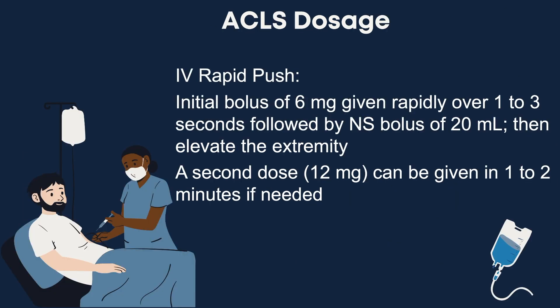For adult dosage of Adenosine, it's given as a rapid push initial bolus of 6 mg over 1 to 3 seconds, followed by a 20 ml normal saline flush. A second dose of 12 mg can be given in 1 to 2 minutes if needed. The half-life of Adenosine is very short — about 10 seconds — so we need to be very quick in administering it for it to be effective.